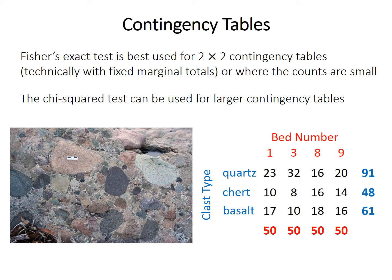The previous video discussed Fisher's exact test, which is also a test for independence. You should use it if you have a 2 by 2 contingency table, even if the assumption of fixed marginal totals isn't met. The chi-squared test isn't well-suited when some of the counts are very small, so Fisher's exact test may be better in that case.